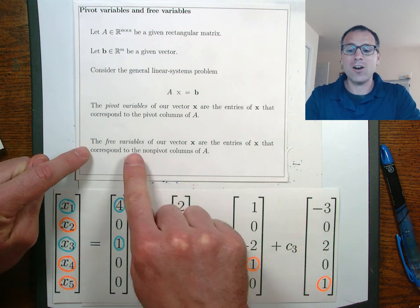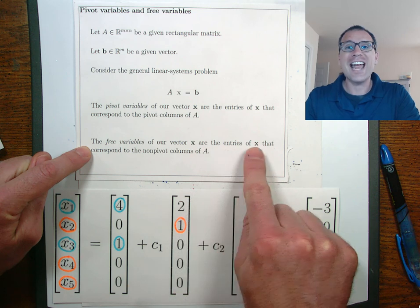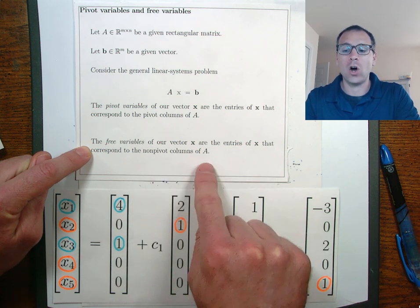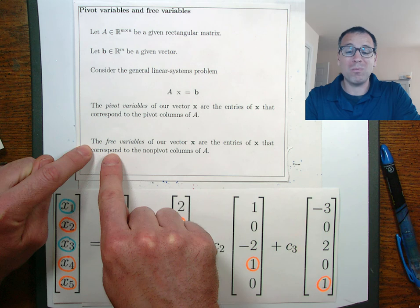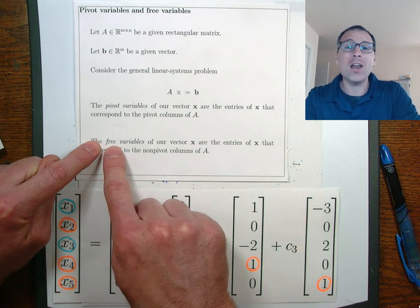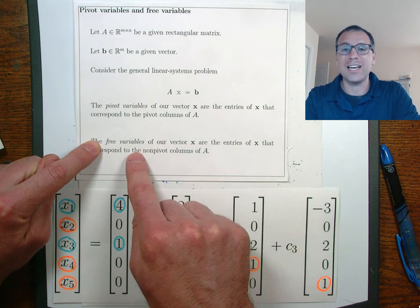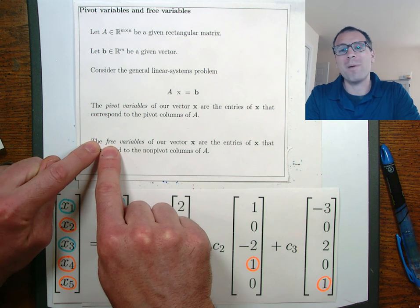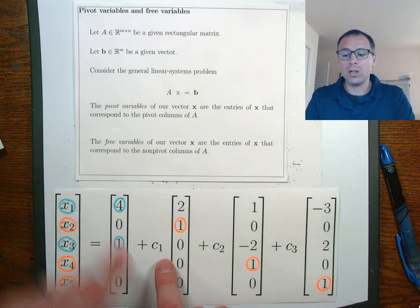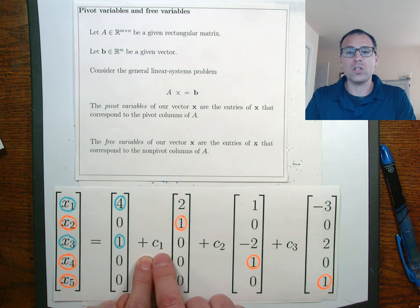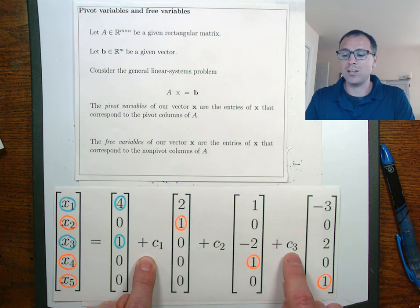Free variables in our vector x are the entries of x that correspond to non-pivot columns. I would also like a synonym for this to be non-pivot variables - that's another way to say it. The reason that mathematicians in the past have called these free is because we're literally free to choose the different values of the constant c1, c2, c3.